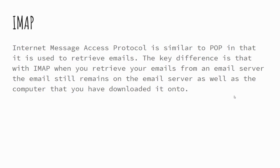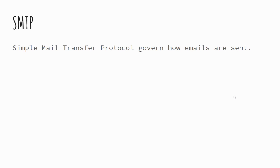IMAP is slightly more modern than POP and is also used for retrieving emails. The key difference with IMAP is that when you download your email it still leaves it on the server — it won't delete it. So if you access your Gmail and download your emails to your computer, it doesn't delete it from your Gmail account; it still remains on the server. SMTP is quite straightforward — it's used when emails are sent. There's nothing more to it than that.